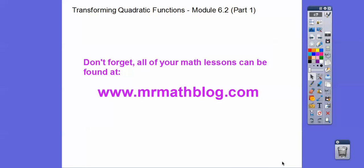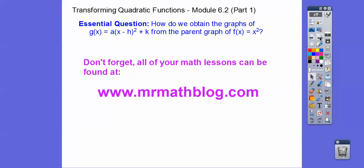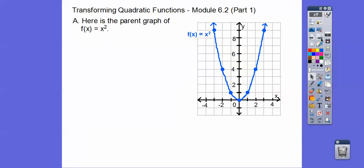Hey folks, this lesson we're going to transform quadratic functions — we're going to move them away from the origin. All your lessons can be found at MrMathBlog.com. The question is: how do we obtain the graphs of g(x) = a(x − h)² + k from our parent graph? We're always going to reference our parent graph, f(x) = x² or y = x².